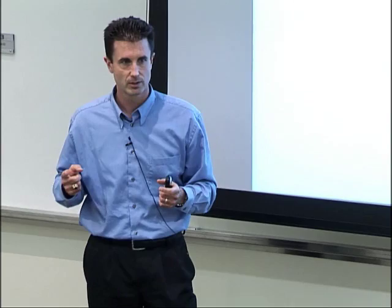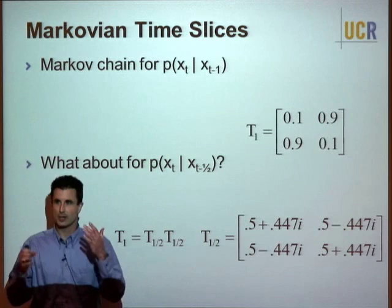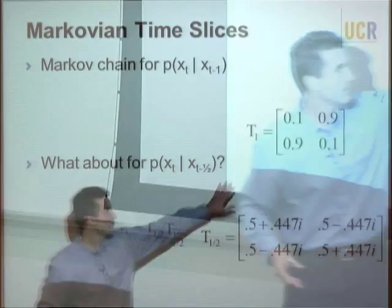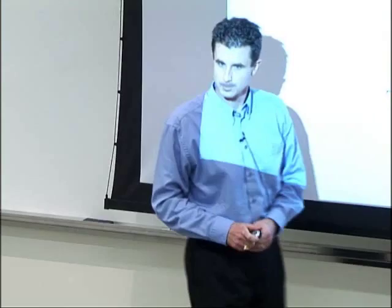One way of viewing this is that the space of discrete time Markov systems is larger than the space of continuous time Markov systems. There are systems that are Markovian at a discrete time but for which no Markovian continuous time counterpart exists. If you believe the Markov assumption reflects a truly Markovian underlying system, using discrete time may lead you to estimate a system that doesn't correspond to any Markovian continuous time process.